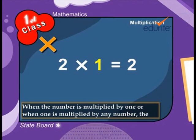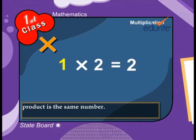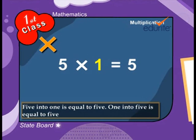When the number is multiplied by 1 or when 1 is multiplied by any number, the product is the same number. For example, 1 into 5 is equal to 5.